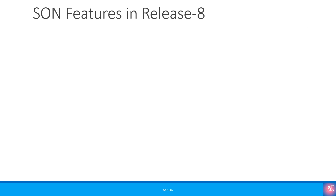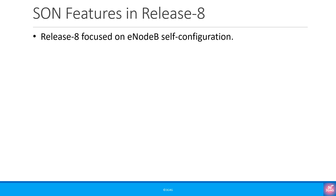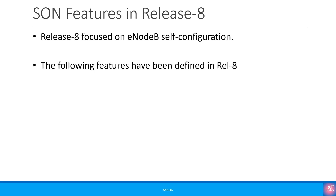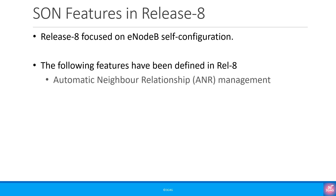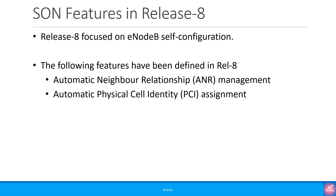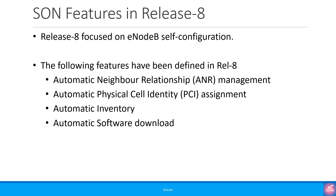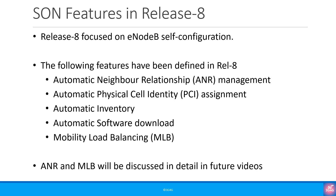Release 8 focused on eNodeB self-configuration. The following features have been defined in Release 8: Automatic Neighbor Relationship or ANR management, automatic physical cell identity or PCI assignment, automatic inventory, automatic software download, and mobility load balancing. ANR and MLB will be discussed in detail in future videos.